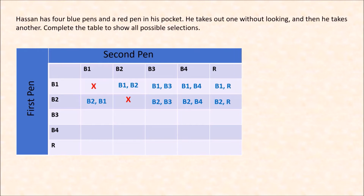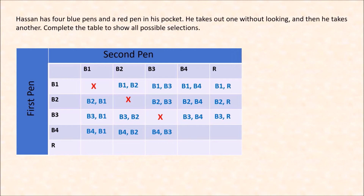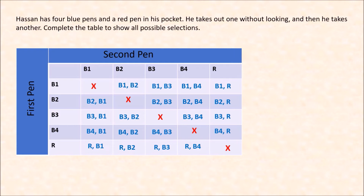Continuing: B3 and B4, B3 and red. For the fourth blue pen B4: B4 then B1, B4 then B2, B4 then B3, and B4 then B4 cannot exist. If the first pen selected is the red one, you have R, B1; R, B2; R, B3; R, B4. Both red cannot be selected because there is only one red pen in his pocket, so he cannot select red twice.